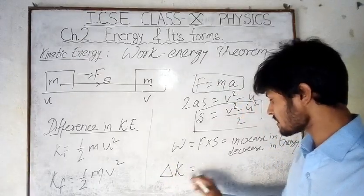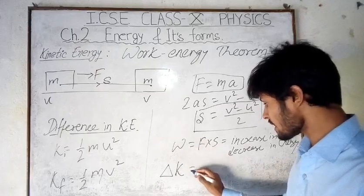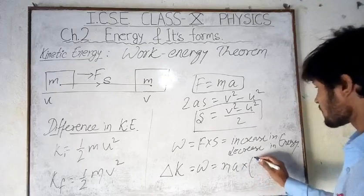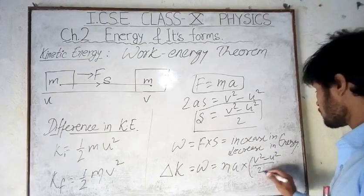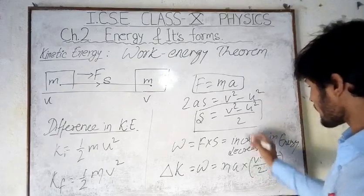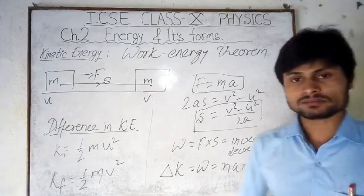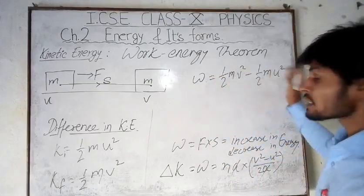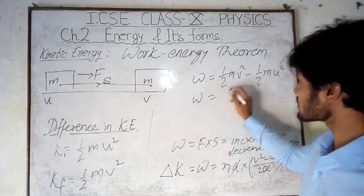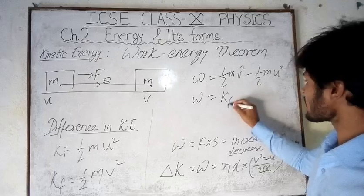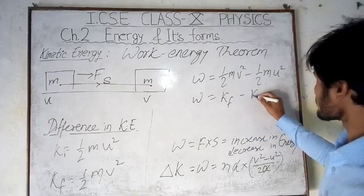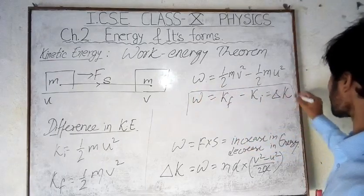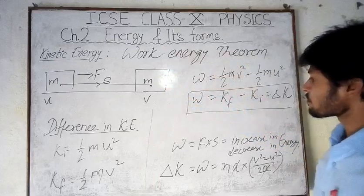The work done equals ½mv² - ½mu², which is the change in kinetic energy. This change in kinetic energy is represented as delta K. So delta K equals the work done. And this work done equals Kf minus Ki — the difference in kinetic energy. This is actually the increase or decrease in energy of the body.